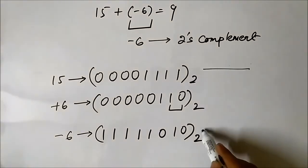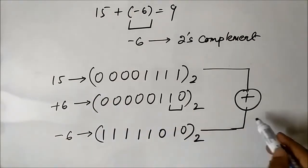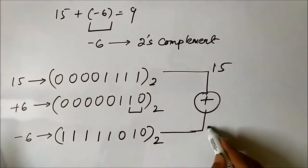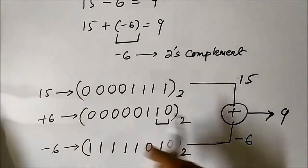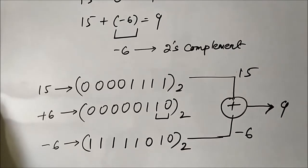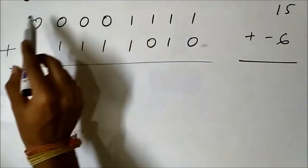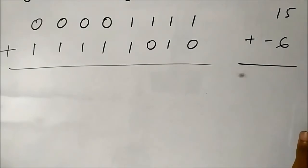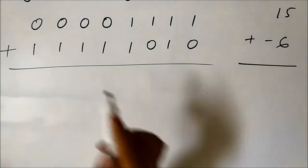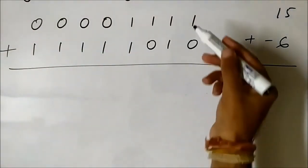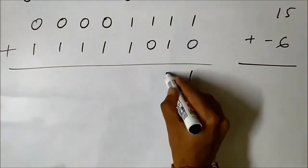Now we have to perform the addition of these two binary numbers: 15 plus minus 6. This is 15 and this is minus 6, and the result will be 9. Let us perform the addition of these two binary numbers. This is 15 represented in binary form and this is minus 6 represented using the 2s complement system. We simply perform the addition: 1 plus 0 is 1.